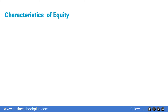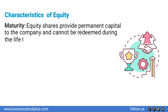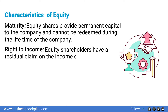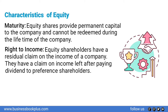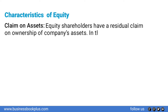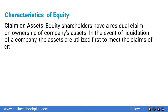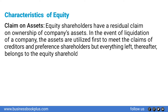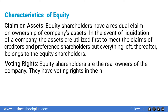Characteristics of equity: Maturity — equity shares provide permanent capital to the company and cannot be redeemed during the lifetime of the company. Right to income — equity shareholders have a residual claim on income after paying dividends to preference shareholders. Claim on assets — equity shareholders have a residual claim on company assets; in liquidation, assets are used first to meet creditors' and preference shareholders' claims, with the remainder belonging to equity shareholders. Voting rights — equity shareholders are the real owners and have voting rights in company meetings.